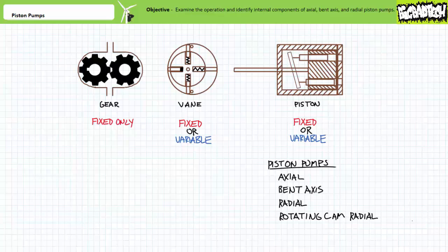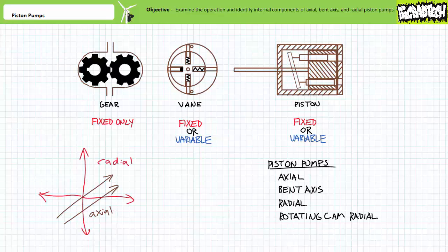Before we begin, let me define the terms axial and radial since we'll be using them a lot. Axial means in line with a drive shaft like an axle, whereas radial means radiating away from the drive shaft like the radius of a circle.